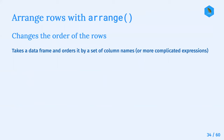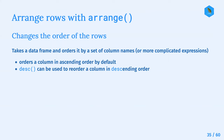The next segment is arranging rows with arrange. This changes the order of the rows - it takes a data frame and orders it by a set of column names or more complicated expressions. It orders a column in ascending order by default, and you use the desc() function to reorder a column in descending order.